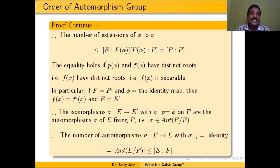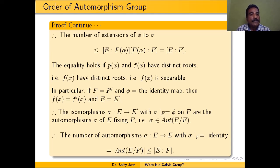Therefore, the number of extensions from φ to σ is less than or equal to the number of extensions from φ to τ times the number of extensions from τ to σ, which is less than or equal to [F(α):F] times [E:F(α)]. By the multiplicative property, this equals [E:F]. Equality holds if P(x) is separable and f(x) is separable; since P(x) is an irreducible factor of f(x), if f(x) is separable then P(x) is also separable.